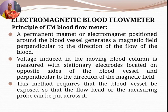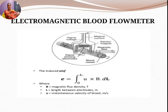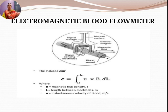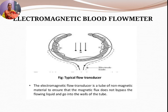The amount of EMF generated depends upon the flow rate of the blood. The induced EMF is proportional to B (magnetic flux density in Tesla), L (the length between the electrodes), and U (the instantaneous velocity of the blood): EMF ∝ U × B × L. So an EMF is induced which is proportional to the velocity of the blood.